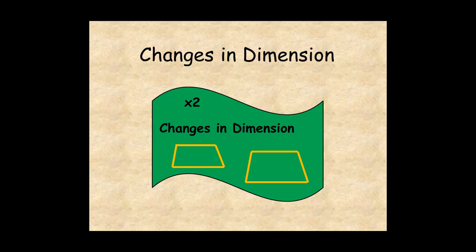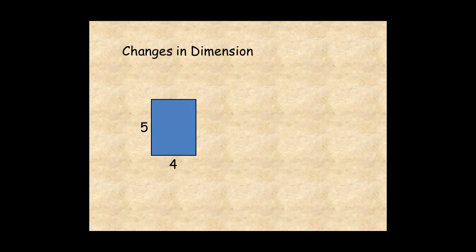This lesson shows you how the perimeter and area of polygons are affected by changes in dimension. Here's a rectangle with length equal to 5 units and width equal to 4 units. Its perimeter is 18 units. Remember that the perimeter is the distance all the way around.